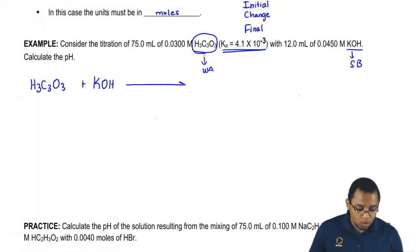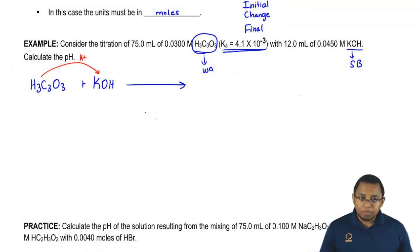Since we're dealing with a strong species, we no longer have double arrows, we have a single arrow going forward. The acid is going to give away an H+, and that H+ will go to the OH- within the base to give us water. What's left, we have K+ which reacts with H2C3O3- to give us that compound.